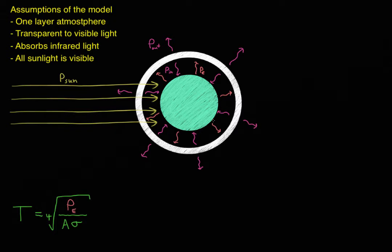A more realistic model would be many, many layers of gas that are all mostly opaque to infrared light and mostly transparent to visible light. So this model does have some issues and it won't actually get us the right answer, but it will allow us to start thinking about how we might treat an atmosphere mathematically. And we'll get something that's actually not too far from the truth.